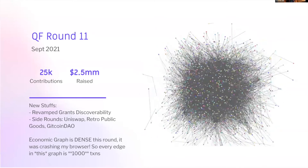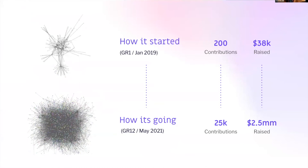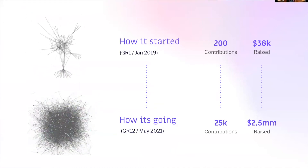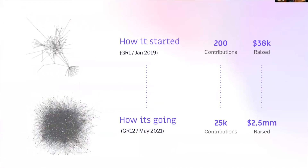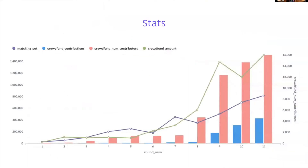I'm really proud of the growth of Gitcoin Grants from when it started in January 2019 to 2021, where we've got 25K contributors and $2.5 million being raised. The red line is the number of contributors, the green line is the crowdfund amount, and the blue is the number of contributions round over round. We've seen pretty solid growth as people have discovered this is a mechanism that actually supports the infrastructure they depend on in the space.